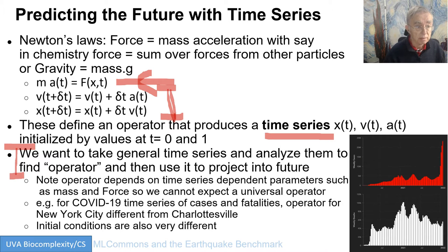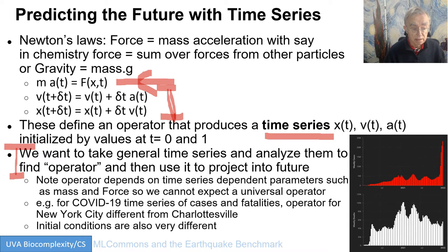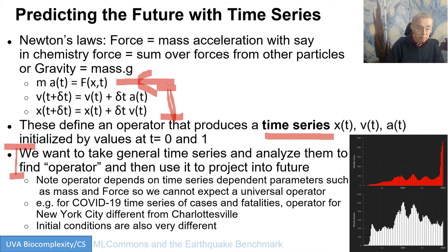In Newton's law there are parameters — mass and g for the simplest law. When we look at earthquakes, we can obviously expect dependence on positions or fault positions; it can depend on all sorts of things. And if we did a time series of COVID observables from Johns Hopkins or the University of Virginia BII as a function of every day, that operator for New York City is going to be different from that for Charlottesville, because different cities have different vaccination rates and different numbers of senior citizens. Also, the initial conditions are very different. Initial conditions are important — clearly this equation depends on the initial conditions.